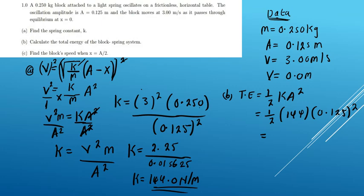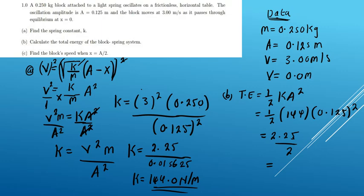Calculating: 0.125 squared is 0.015625, multiplied by 144 gives 2.25, then divided by 2 we get 1.125 Joules. So the total energy is 1.125 J. That's the answer for the second part.